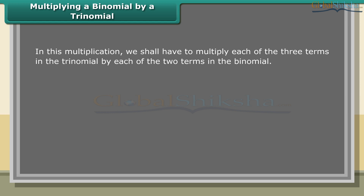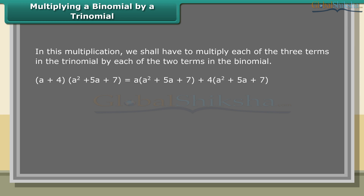Multiplying a binomial by a trinomial: we multiply each of the three terms in the trinomial by each of the two terms in the binomial. Example: (a plus 4)(a² plus 5a plus 7) equals a(a² plus 5a plus 7) plus 4(a² plus 5a plus 7), which equals a³ plus 5a² plus 7a plus 4a² plus 20a plus 28, which equals a³ plus 9a² plus 27a plus 28.